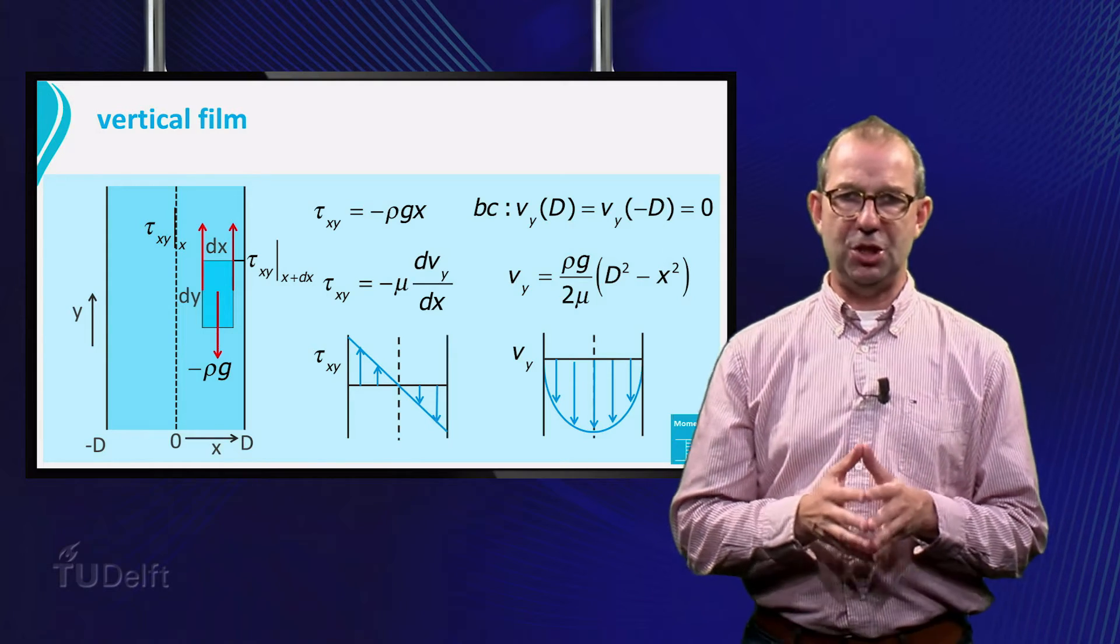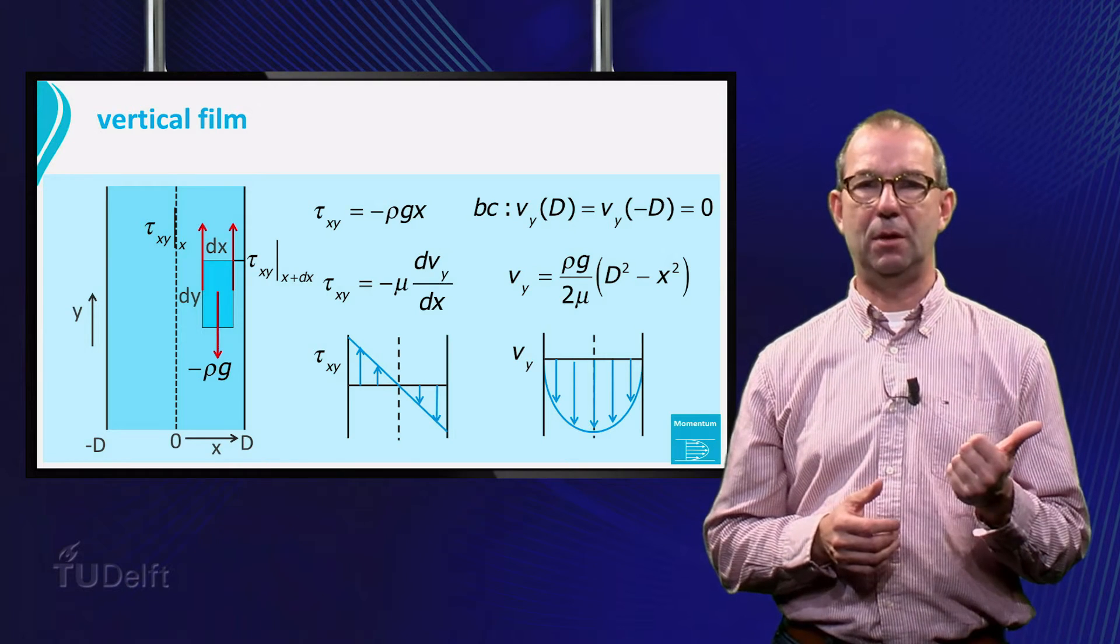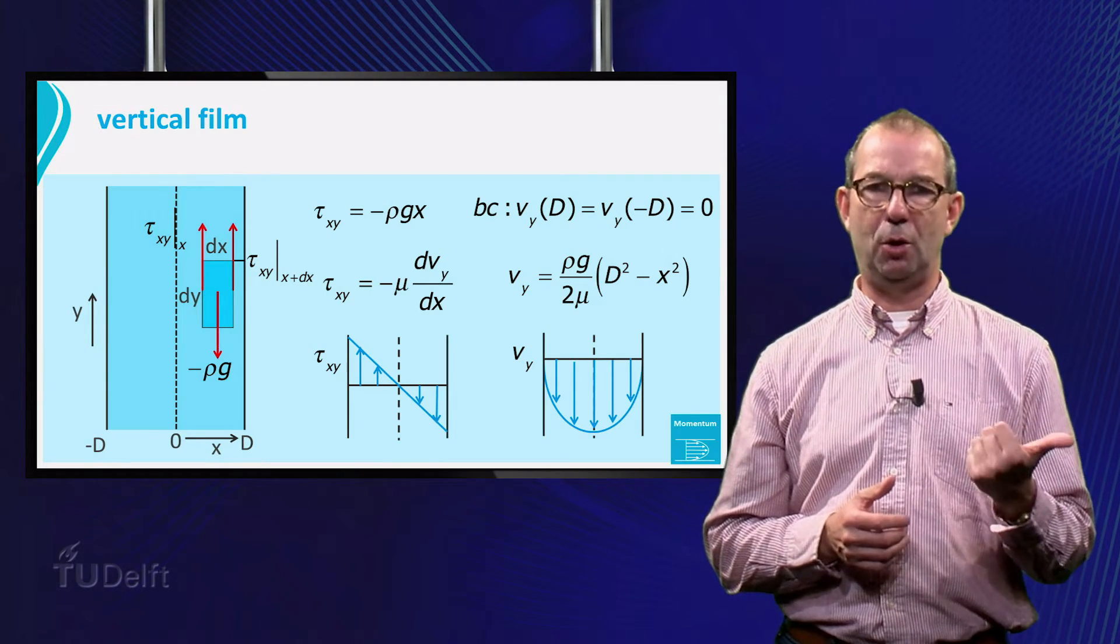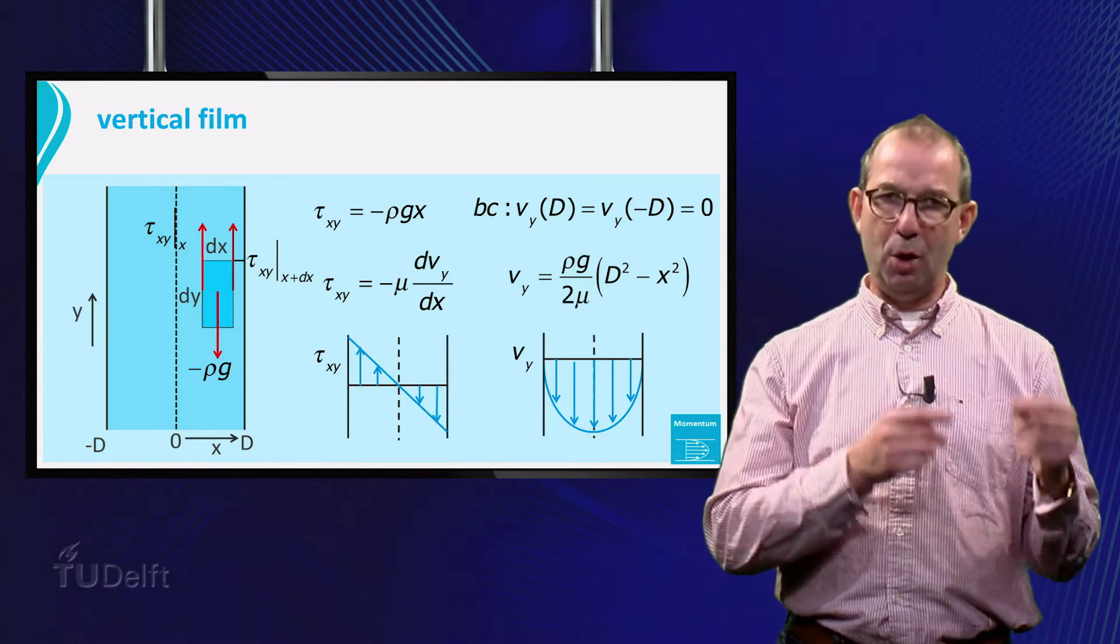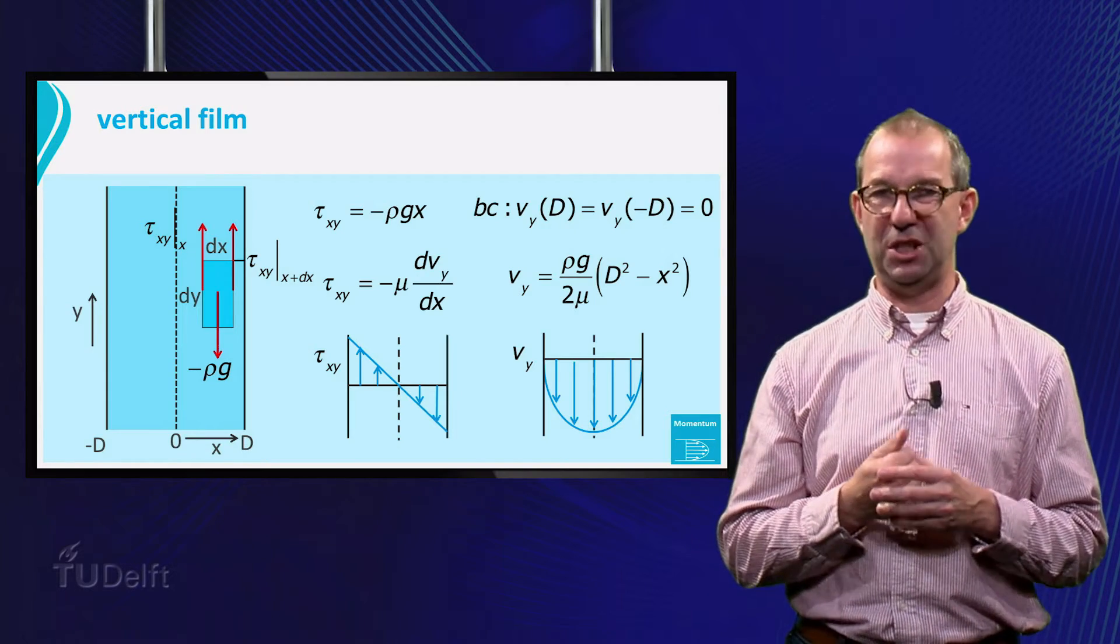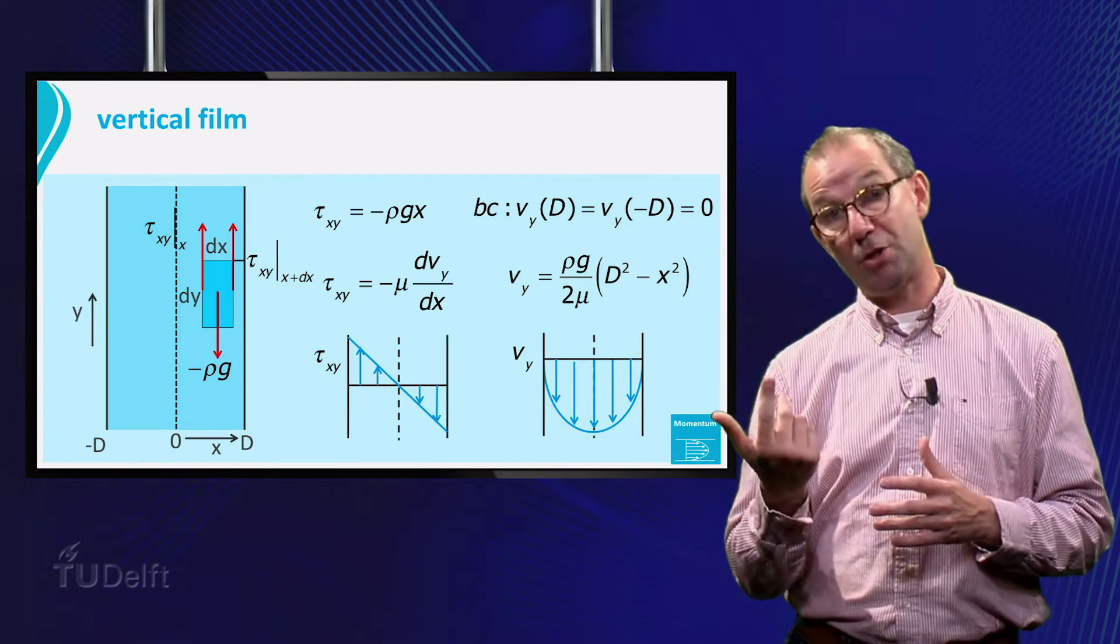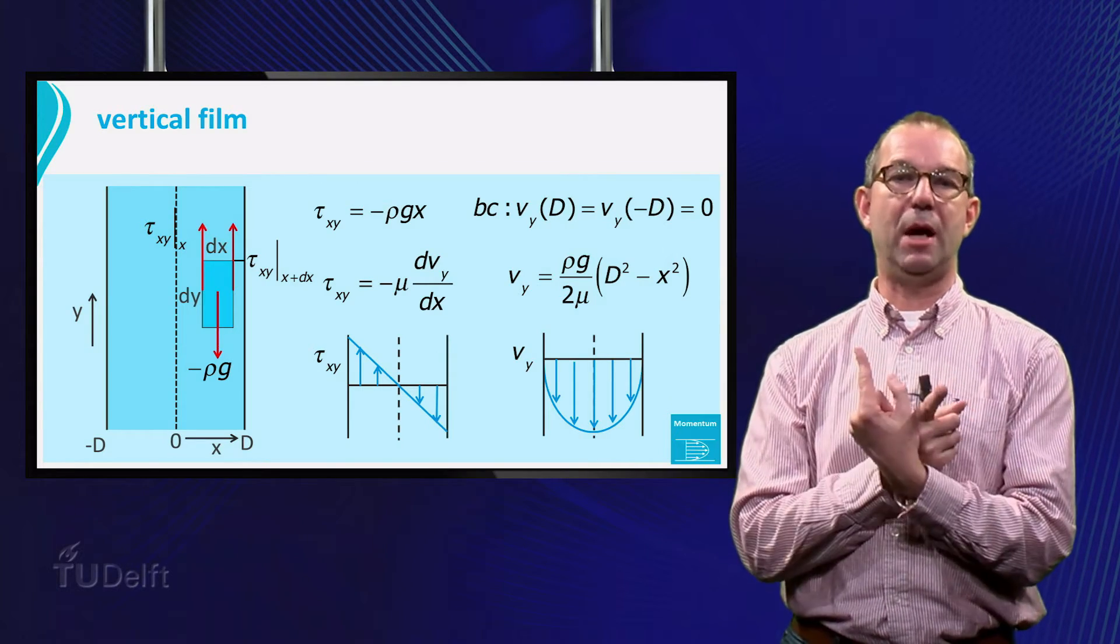Note that the shear stress profile is in line with the velocity. At the left side, the fluid layer with the smaller coordinate has more negative velocity, moves slower and exerts thus an upward friction force on the adjacent layer with a larger coordinate. At the right hand side, it is just the other way around.